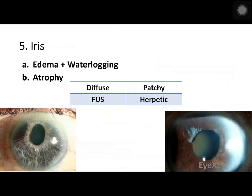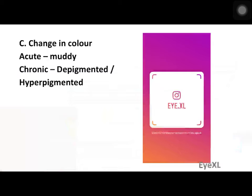Iris atrophy is diffuse as seen in Fuchs uveitis syndrome, and patchy in herpetic uveitis. There can also be a change in color, called heterochromia — muddy in acute uveitis, and depigmented or hyperpigmented in chronic uveitis. An Instagram post covering different iris colors and associated conditions is available on the i.excel profile.